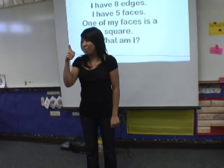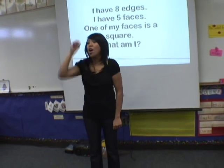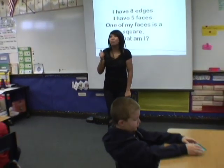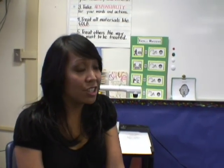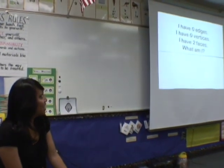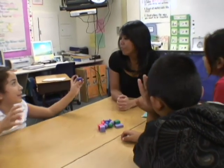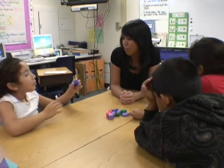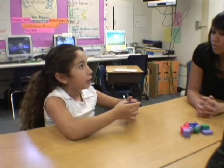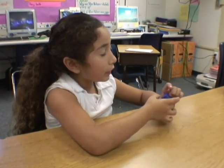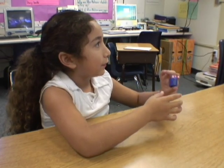Put your thumb up, and when I see that everyone has their thumb up, I'll roll the dice and we'll see who's going to stand up and share out. Let's look at our next riddle: I have zero edges, I have zero vertices. Let's look at the next clue — it has two faces.